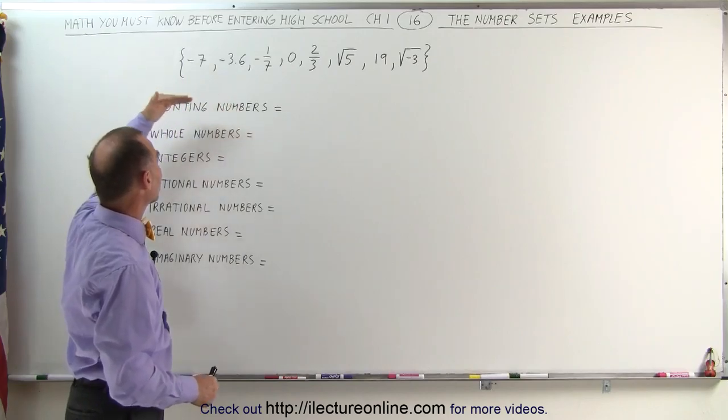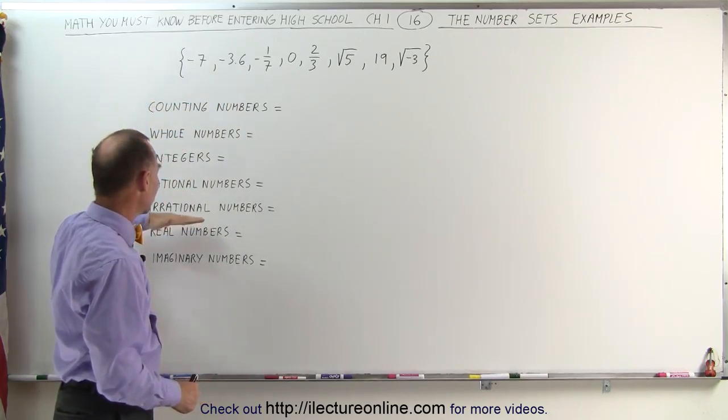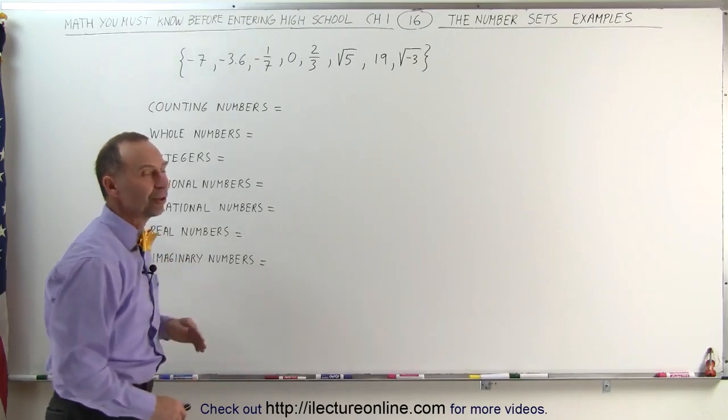Which of these numbers are counting numbers, whole numbers, integers, rational numbers, irrational numbers, real numbers, and imaginary numbers?